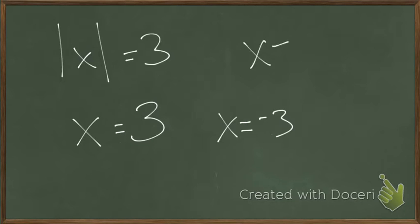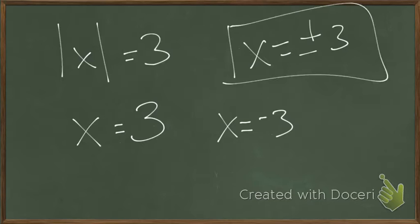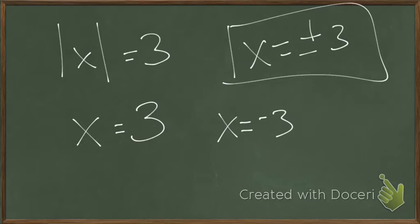Another way you might see it written is plus or minus three, which is saying a positive or a negative three. You'll also see that with square roots, because square roots have two answers — a positive and a negative. We know that positive three and negative three both have the same absolute value of three; they're both three away from zero, just like that person skating could be 60 feet away in more than one spot.